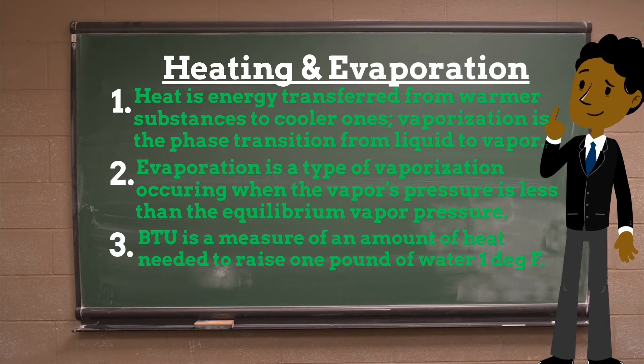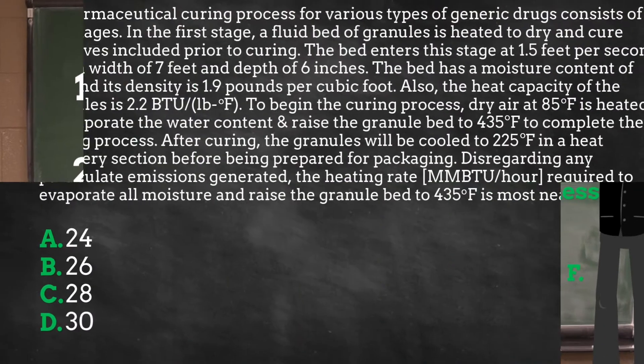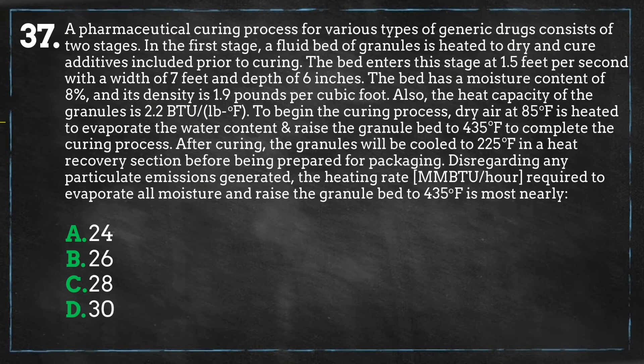For solid materials, the amount of energy required to raise its temperature will vary. For our pharmaceutical granules, it takes 2.2 BTU to raise one pound of material by one degree Fahrenheit. The question essentially asks how much energy it takes to evaporate the moisture in the granule bed and raise the bed temperature from 85 degrees to 435 degrees Fahrenheit. First, we need to figure out how many pounds of granules we will be processing per hour.